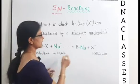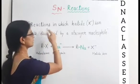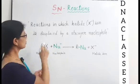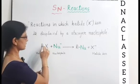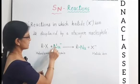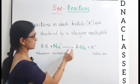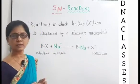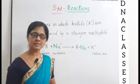Toh yeh jo equation hai, yeh represent kar raha hai humari is definition ko. Those reactions in which halide ion is displaced by any nucleophile, those are called SN reactions.